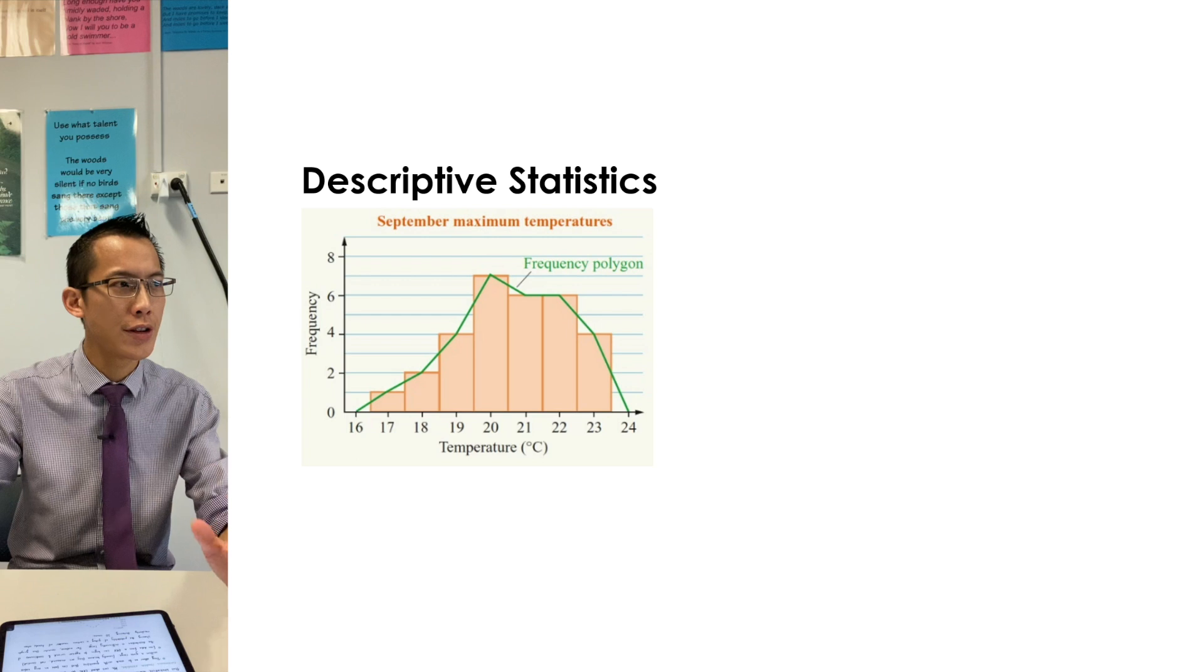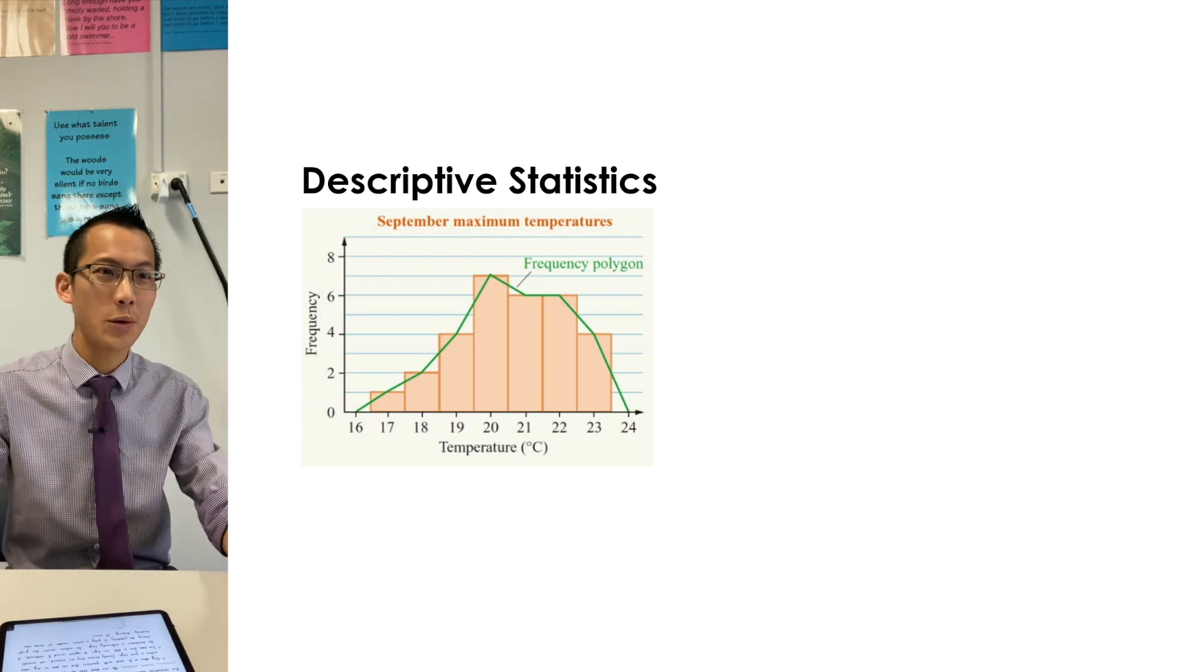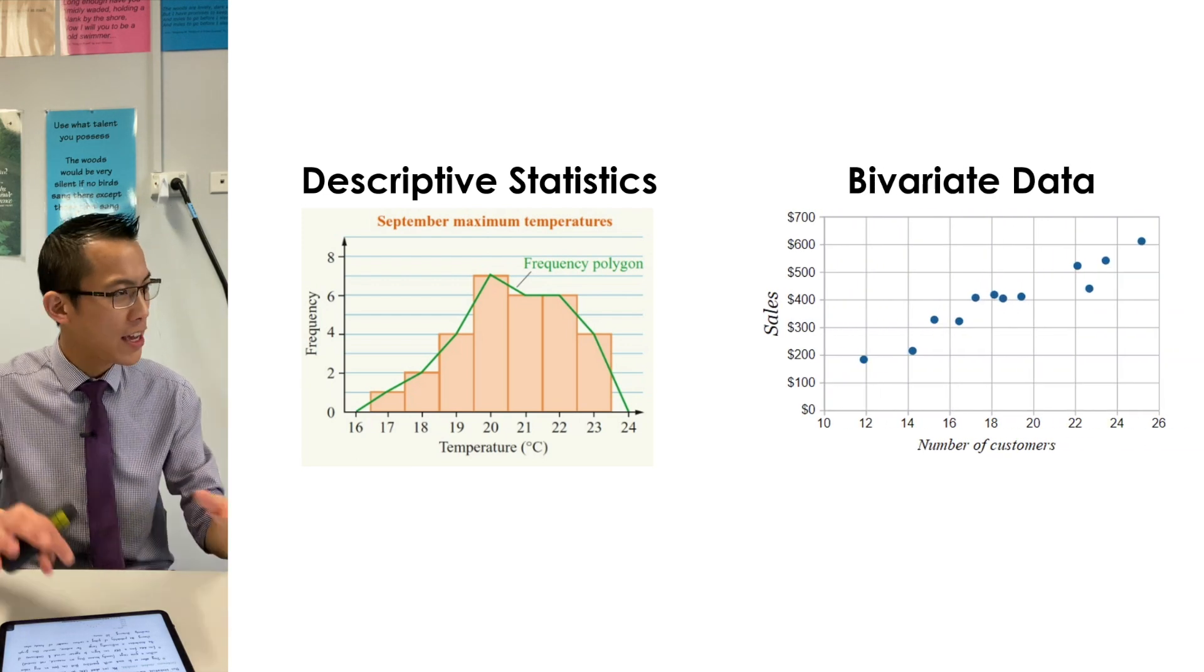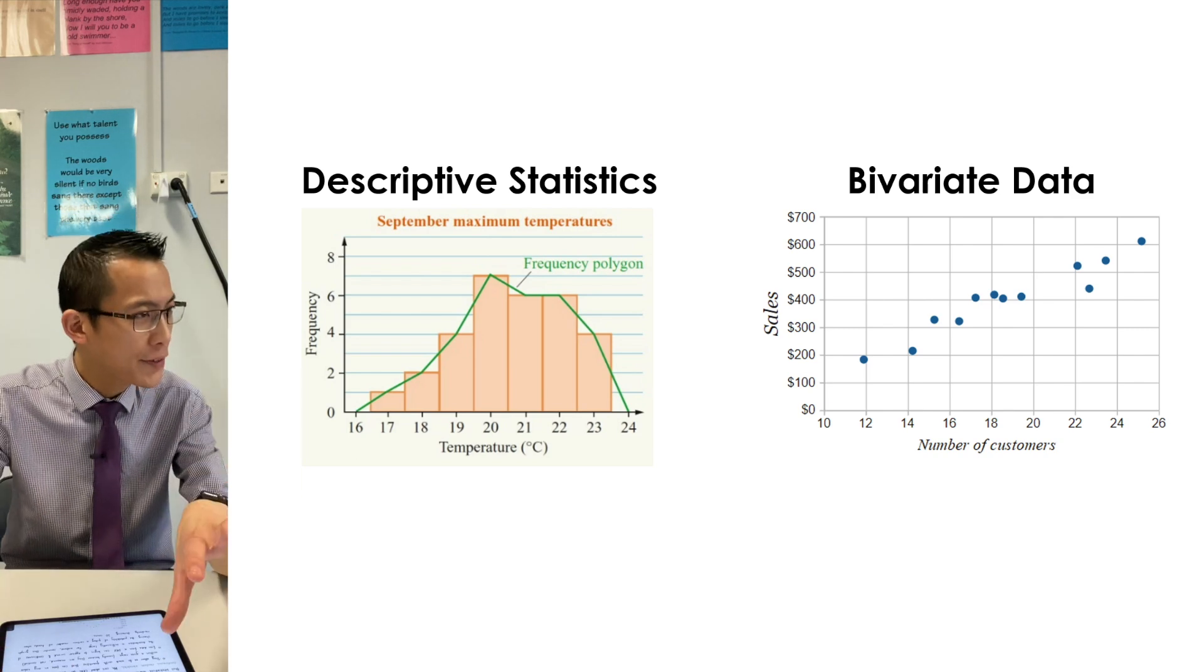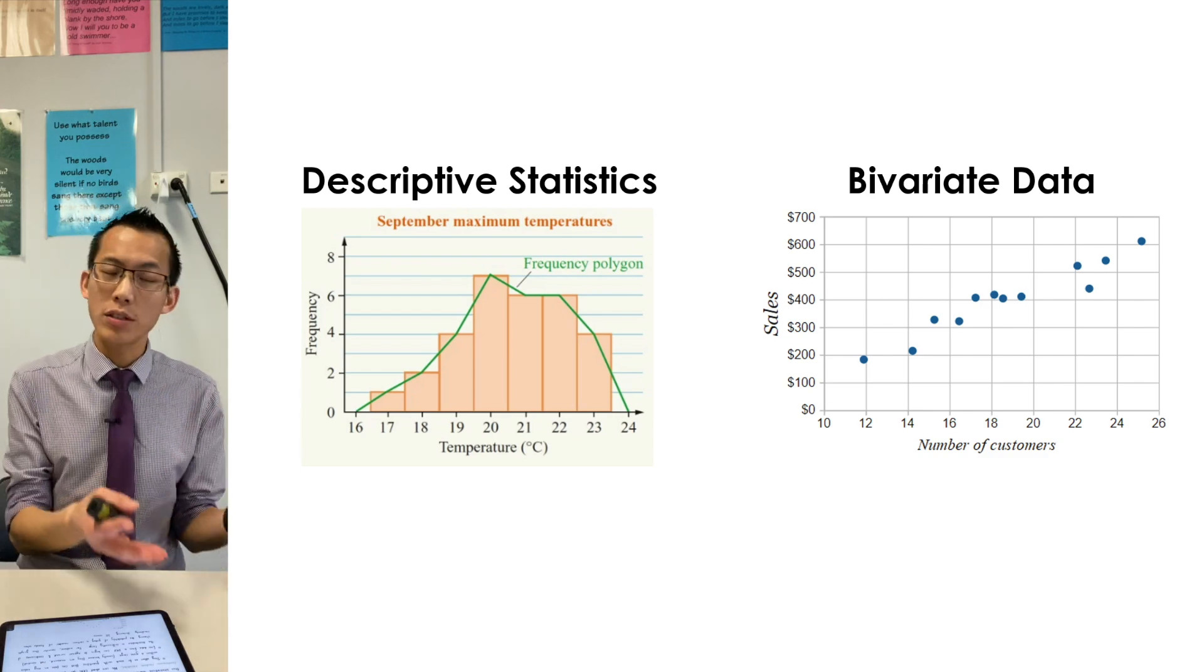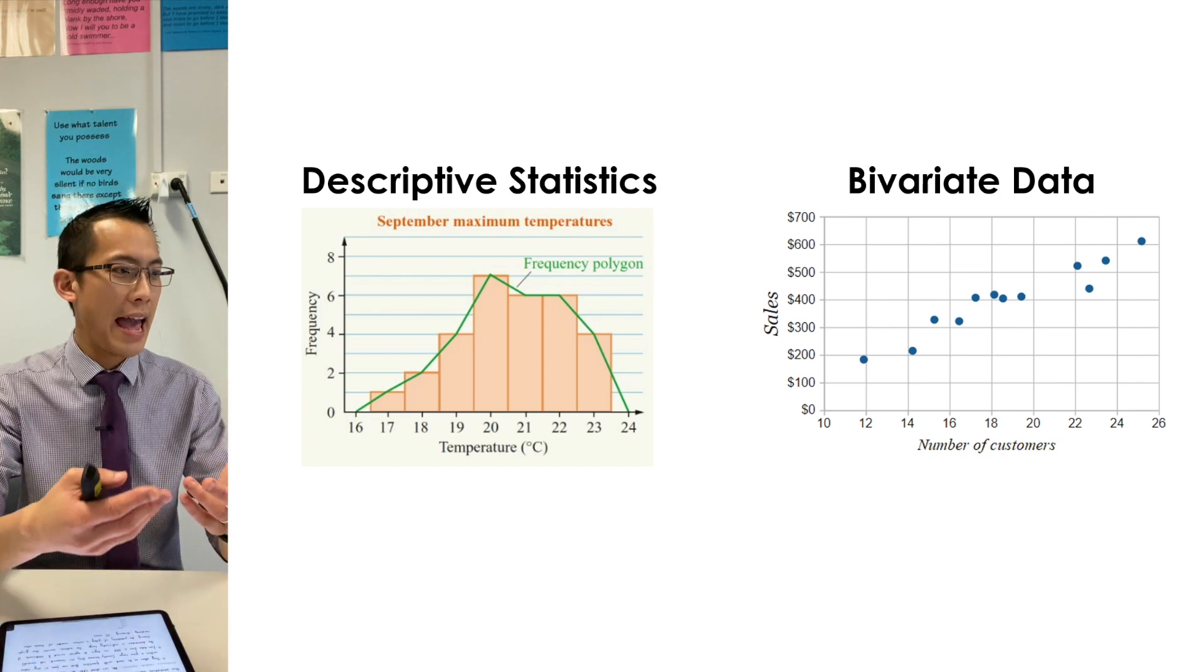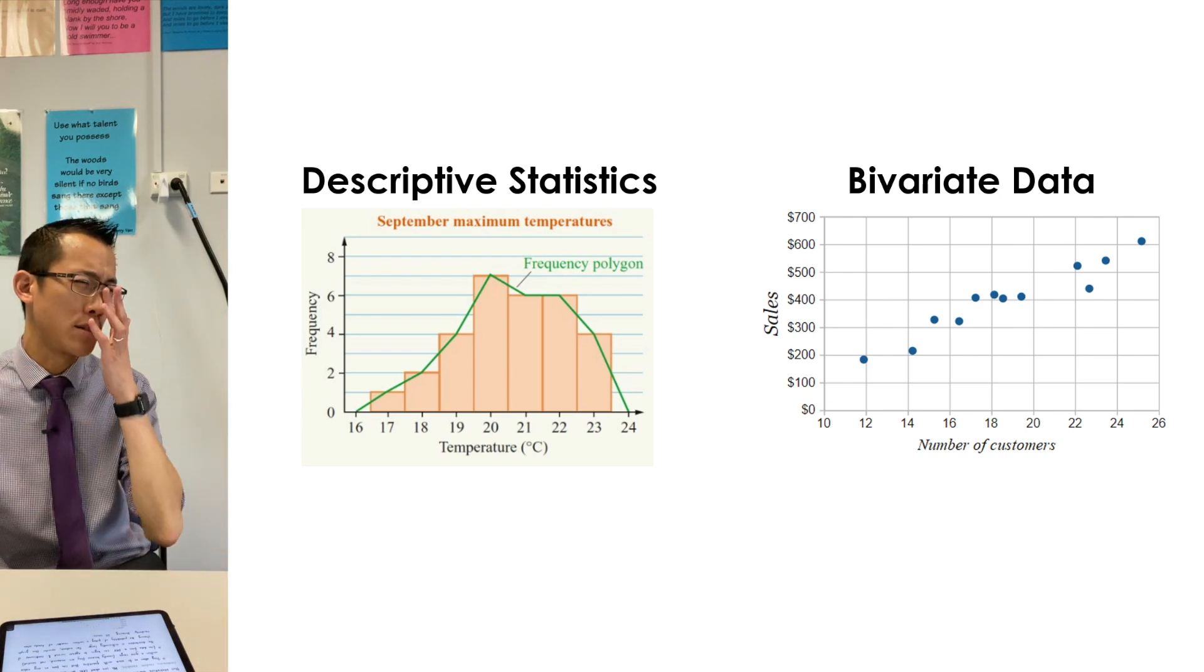So when we moved from single variable statistics to add another variable, you might recall this is called bivariate data. So here you can see, again, it's a two-dimensional chart, but it's quite different because the vertical axis here represents a whole other data point. So here we're comparing two quantities that are clearly related, the number of customers who walk into a store and the amount that you actually make in sales based on that number of customers.